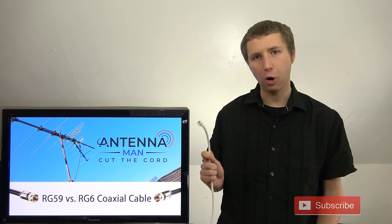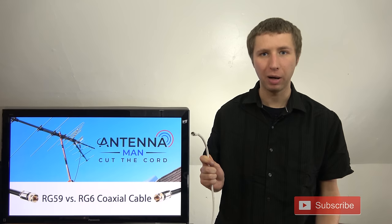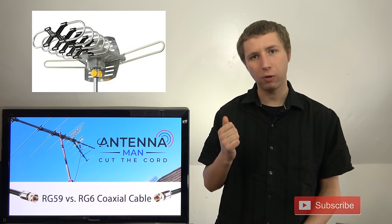This white cable is a cheap RG59 coaxial cable that commonly comes with junk antenna models that I tell people not to buy, but they buy them anyway. This is an example of one, this is an example of one, and this is an example of one.